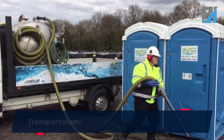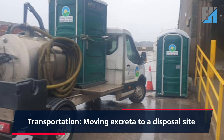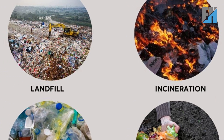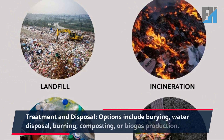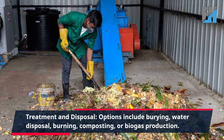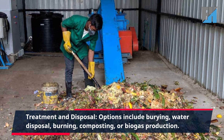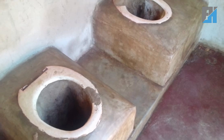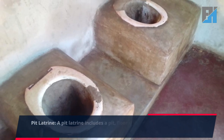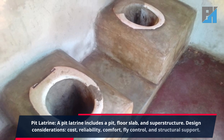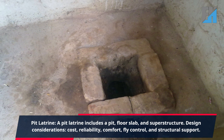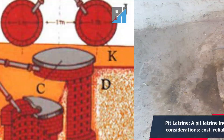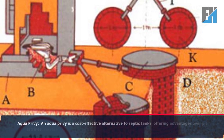Three, transportation — moving excreta to a disposal site; four, treatment and disposal — options include burying, water disposal, burning, composting, or biogas production. Pit latrine: a pit latrine includes a pit, floor slab, and superstructure. Design considerations include cost, reliability, comfort, fly control, and structural support.